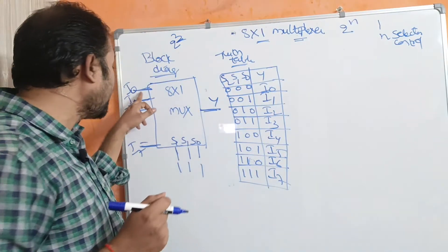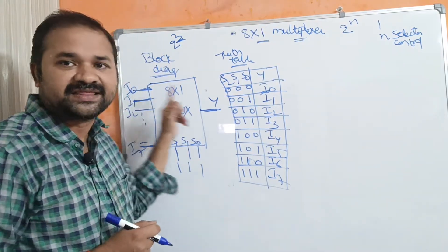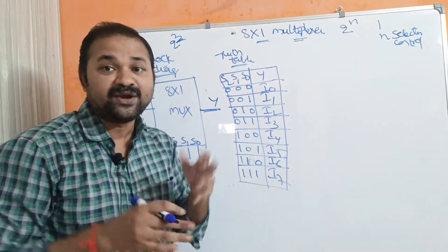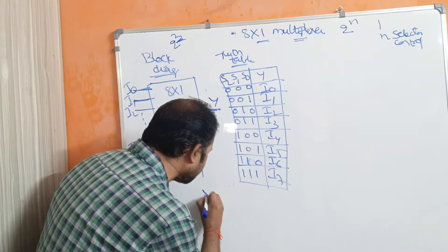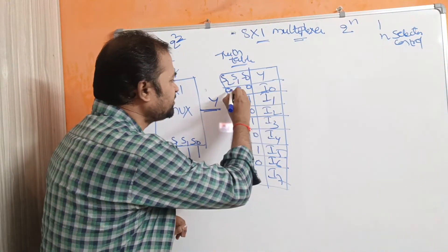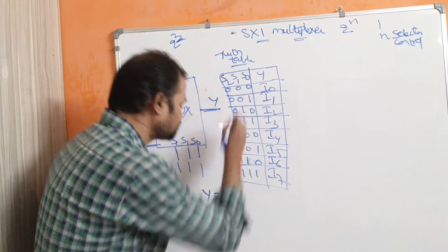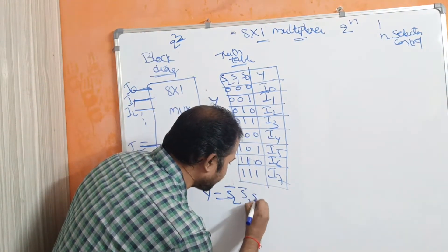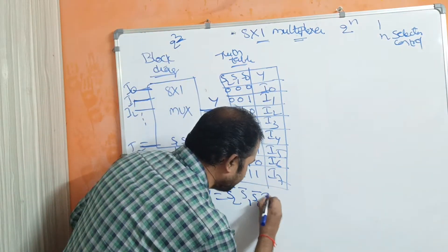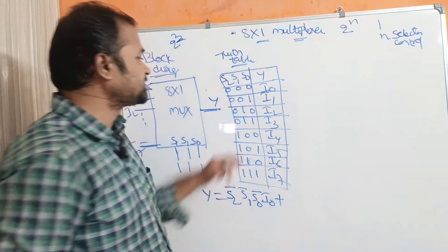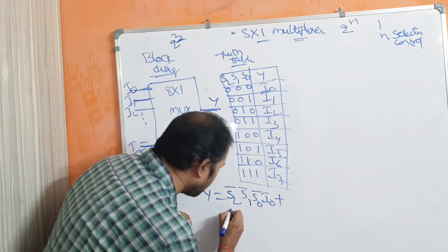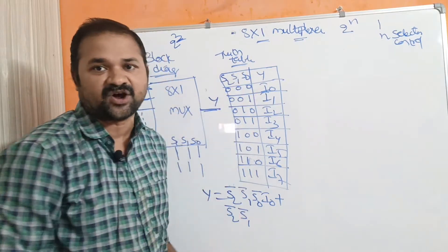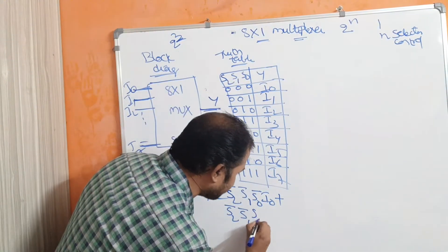At a time only one input line will be active, and that input line will be displayed as the output depending upon the selection input. Now let us evaluate the expression. Y equals: the first term for 0,0,0 is S2_bar · S1_bar · S0_bar · i0, plus for 0,0,1 it is S2_bar · S1_bar · S0 · i1.